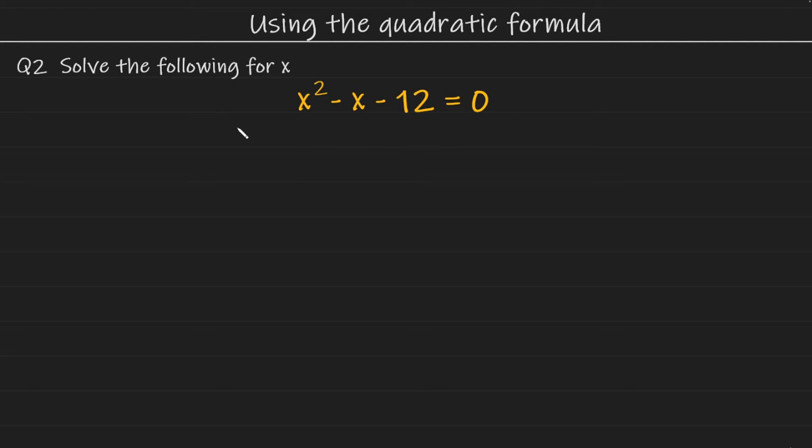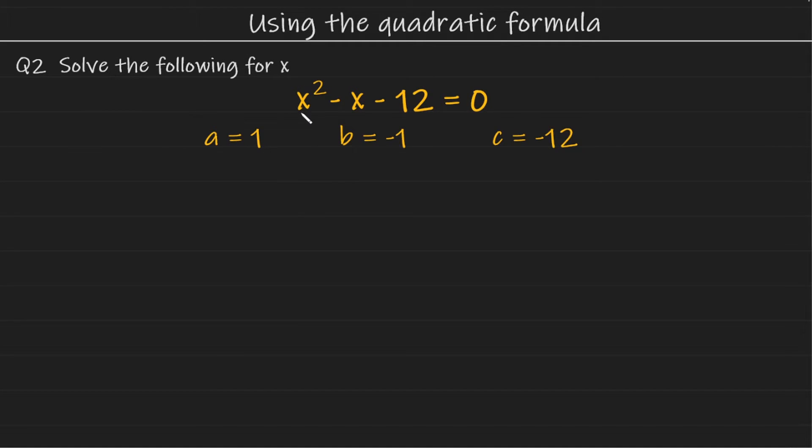Just as we did in the previous example, I'm going to begin by writing down the values for a, b, and c. The coefficient of x squared in this case, even though it's not visible, we know to be 1.